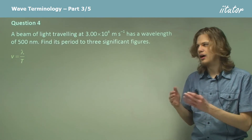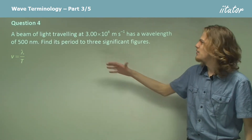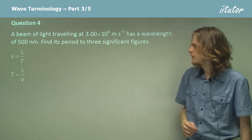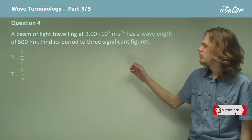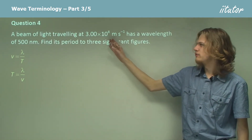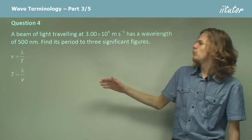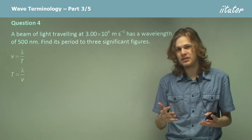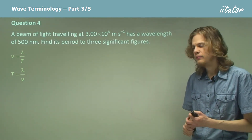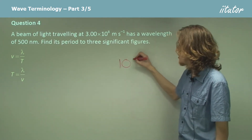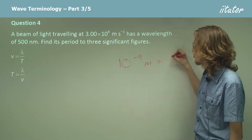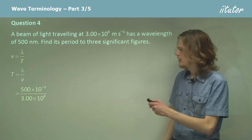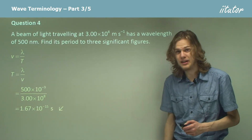To make the period the subject of the equation, we multiply both sides by the period and then divide both sides by V. So T equals lambda over V. All we need to do now is substitute in our values for lambda — 500 nanometers — and V — 300 million meters per second. We need to convert the wavelength into SI units, that is meters. Remember that 10 to the power of minus 9 meters equals 1 nanometer. Substituting in these values, it turns out to be 1.67 times 10 to the minus 15 seconds.